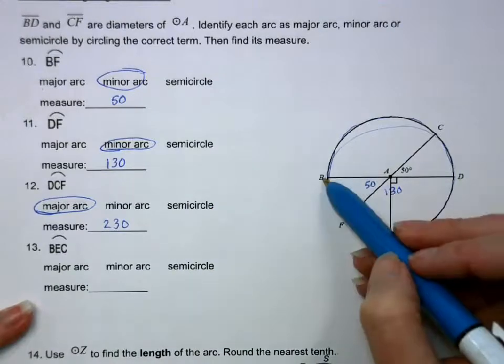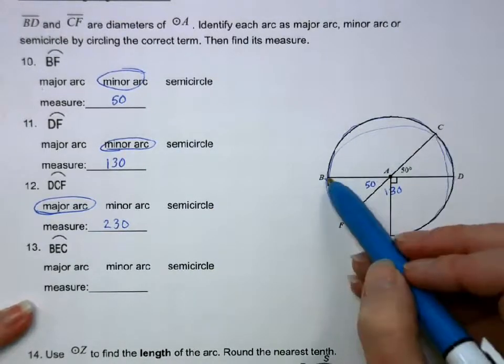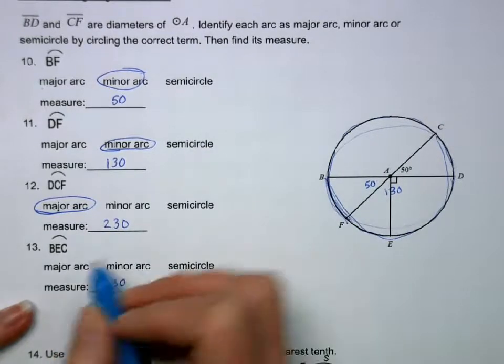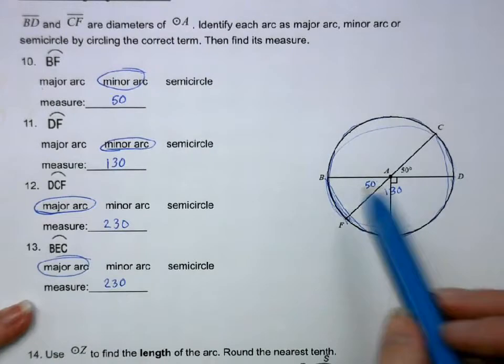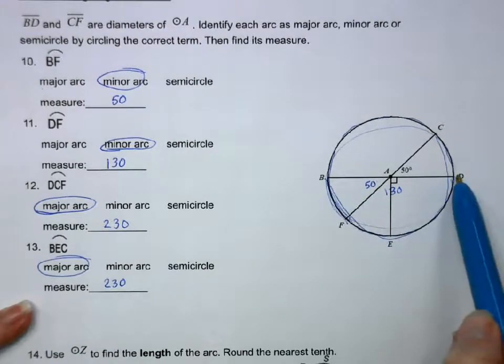And last, BEC is going to be 180 plus 50. So it is also 230. And it is major. If I had something like BFD, that would be a semicircle.